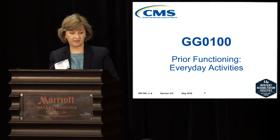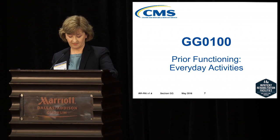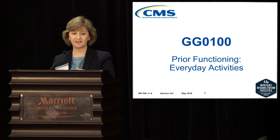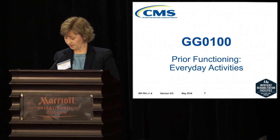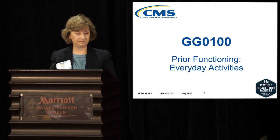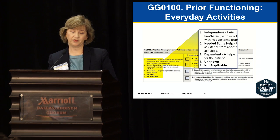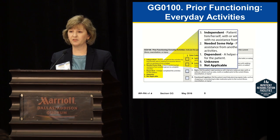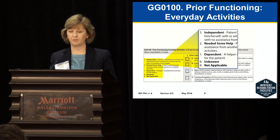Starting with GG0100, which is on page 6 of the IRF-PAI, in the area of prior functioning you'll see a three-level rating scale where 3 is independent, 2 is needing some help, and 1 is dependent. We also have the option that it may be unknown or that the information is not applicable. The rationale for prior functioning is that knowledge of the patient's prior functioning — prior to the current illness, exacerbation, or injury — may inform treatment goals.